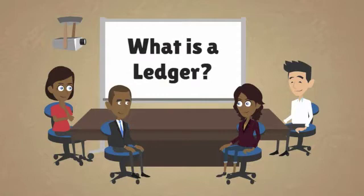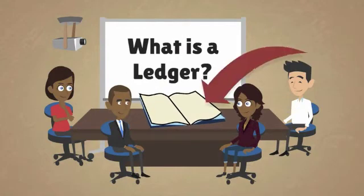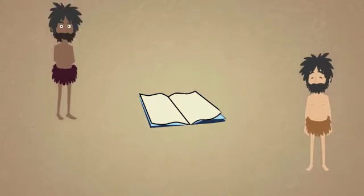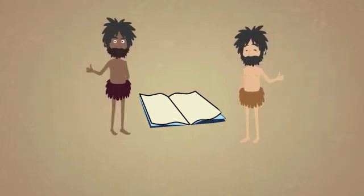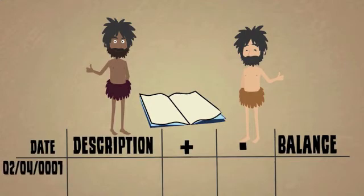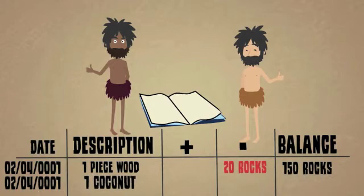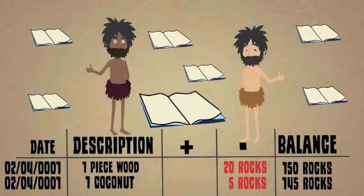A ledger is just an old-fashioned name for a book. Back in the dim ages, before we had computers, people put all their financial information into ledger books. These books are comprised of columns and rows, allowing space for descriptions, amounts, and balances. There are ledger books for many different things: stock, customers, suppliers, and more.